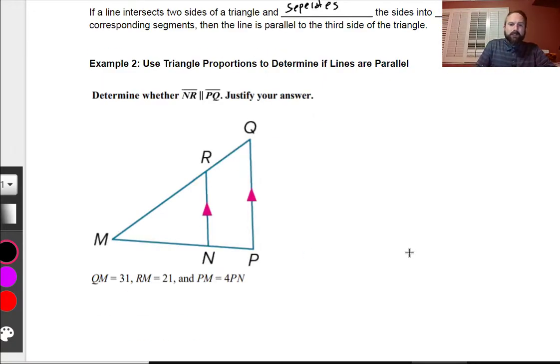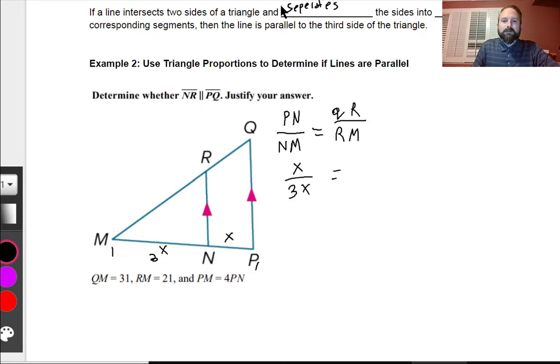We're going to use the triangle proportions to determine if lines are parallel. So they're saying, hey, we want to check this. Is NR parallel to PQ? Well, we can say, hey, there's going to be PN over NM. Now we have a couple different things. PM is, we can label this as X, and it says PM is 4PN, so if the whole thing is 4X, and this little part is X, then this has to be 3X's for MN. So I can write this out as equal to QR. Well, QR, I know QM is 31, and RM is 21, so that means QR should be 10.